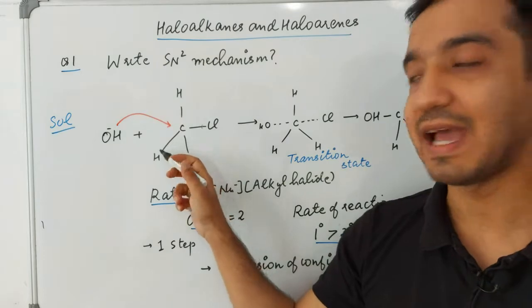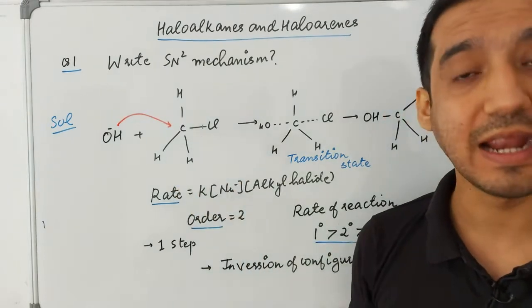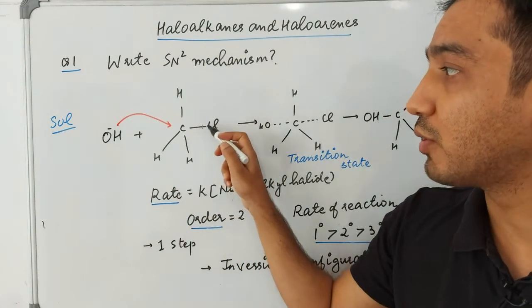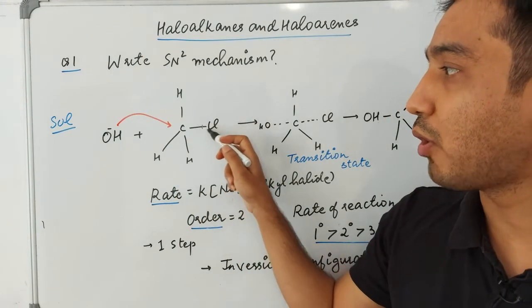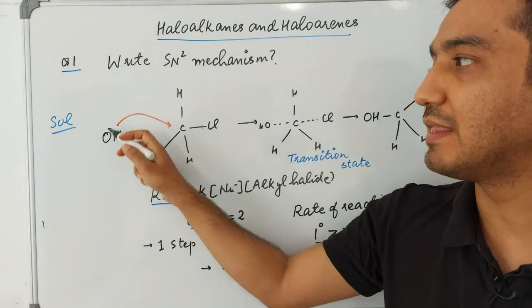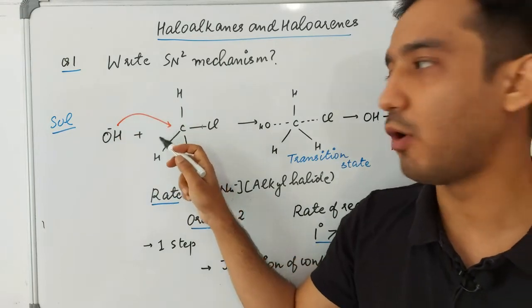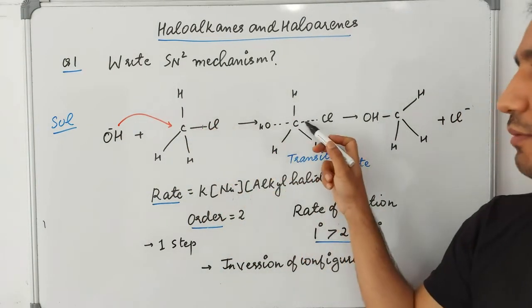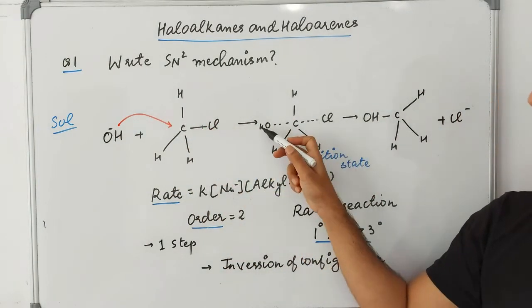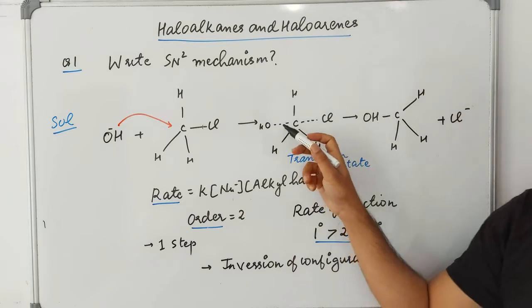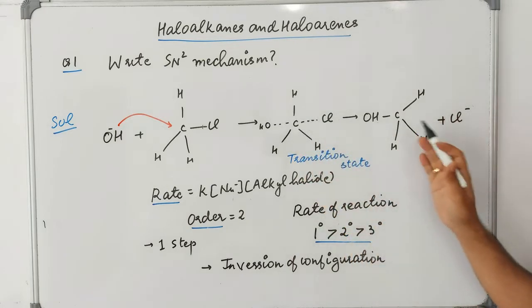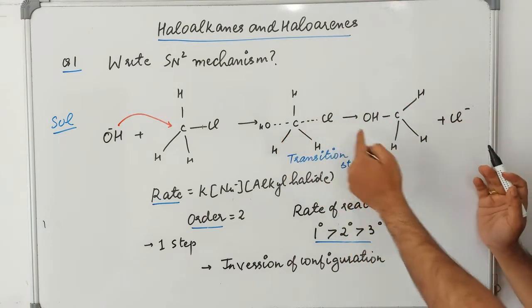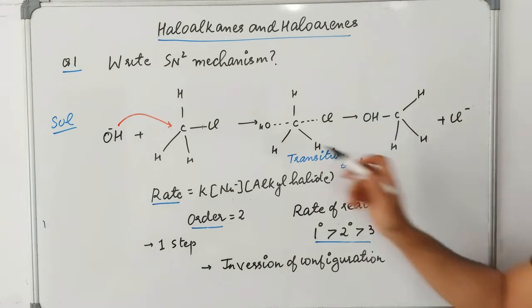In SN2, one nucleophile will attack the alkyl halide. The chlorine bond will be broken and the OH bond will be formed. This is the transition state — in this transition state, the chlorine bond is being broken and the OH bond is being formed. In the final stage, chlorine is removed and OH is joined.